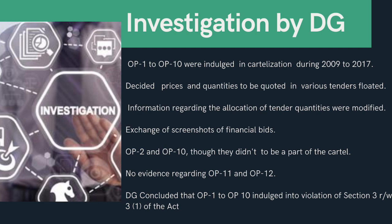The DG found that OP1 to OP10 used to decide the prices and quantities to be quoted by them in various tenders floated by Indian Railways and other entities for the procurement of CBBs. One employee of OP1 used to keep records of such allocation of tender quantities amongst the opposite parties by maintaining Excel sheets, which were modified from time to time according to inputs received based on lower or higher quantities allotted in a particular tender. Furthermore, OP1 to OP10 used to exchange screenshots of their financial bids to ensure that all of them stuck to their promise of quoting the pre-decided prices. OP1 to OP10 also used to meet at different locations to decide the strategy and modus operandi of their cartel, and to resolve differences amongst them. Eight of these opposite parties admitted that they formed a cartel to rig the bids of different CBB tenders floated by Indian Railways and other entities.